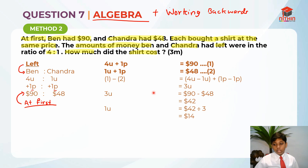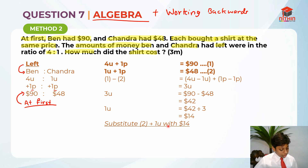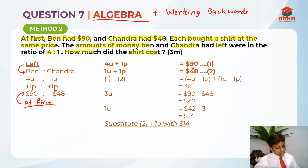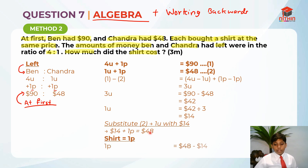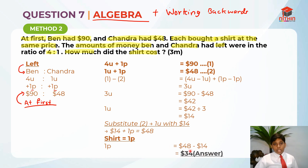The shirt costs 1 part, so we substitute back into Equation 2. Substituting 1 unit equals $14 into 1u + 1p = 48: that gives $14 + 1p = $48. So 1 part equals $48 minus $14, which equals $34. The shirt is $34 — the same answer as Method 1.